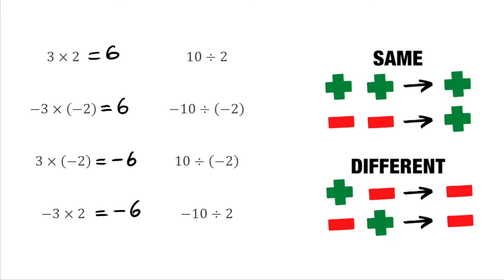Similarly for this column on the right, we've got 10 divided by 2, so a positive divided by a positive. Signs are the same, so it's going to be a positive number — 10 divided by 2 is 5. Moving down we've got a negative divided by a negative. Again, signs are the same, so it's going to give us a positive result, and 10 divided by 2 is 5. Moving down we've got 10 divided by negative 2 — a positive divided by a negative — because the signs are different, we're ending up with a negative result, so that would be negative 5.